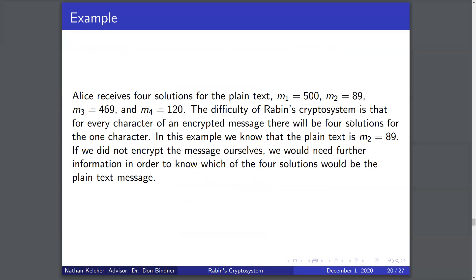Alice receives four solutions: M1 = 500, M2 = 89, M3 = 469, and M4 = 120. This is the difficulty of Rabin's cryptosystem — for every character or word encrypted and assigned a numeric value, we get four potential solutions. In this example, we know M2 = 89 is correct because we saw that Bob encrypted the capital Y, which is equivalent to 89 on the ASCII table. Alice, however, would not be able to tell which is the correct solution without further information.